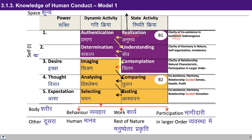The realization has taken place; the authentication is complete; the understanding is complete; the determination gets complete; the contemplation gets complete. So we have complete clarity of harmony in the nature — that is self-organization, innateness. With this we have clarity of relationship, natural characteristic and participation in the larger order. With this kind of awakening, the imaging is now free of all preconditionings, and the desires get definite. The comparing is now completely guided by coexistence, harmony and relationship, and the senses, health and profit are guided.